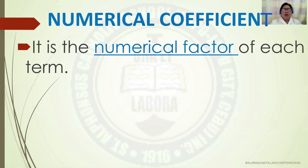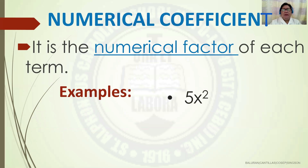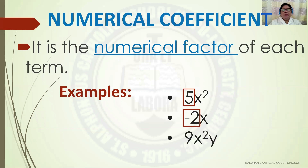What is a numerical coefficient? It is the numerical factor of each term. For example, in 5x squared, 5 is the numerical coefficient. In negative 2x, negative 2 is the numerical coefficient. In 9x squared y, 9 is the numerical coefficient.